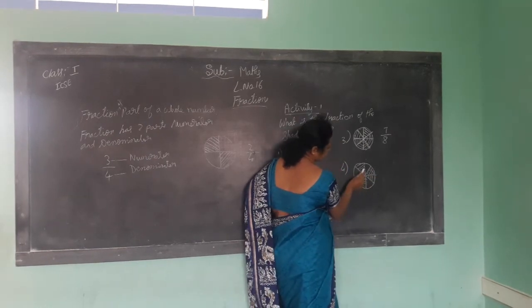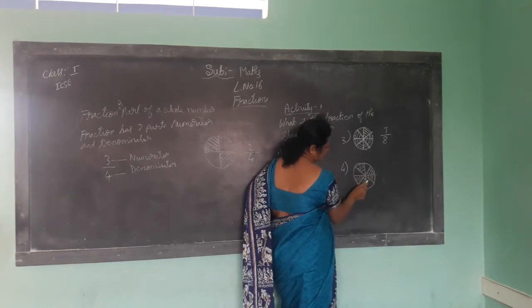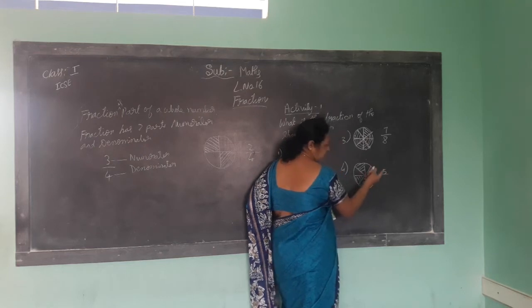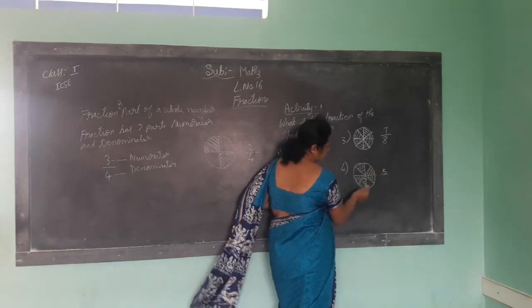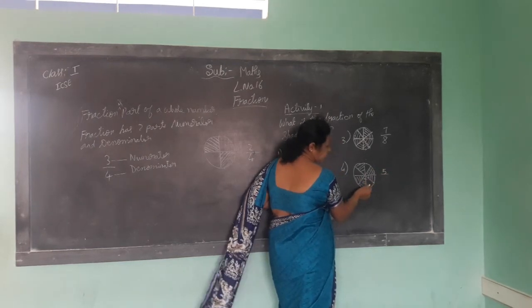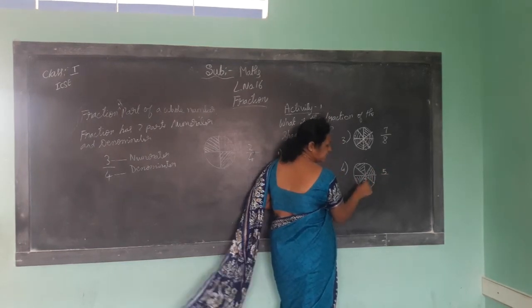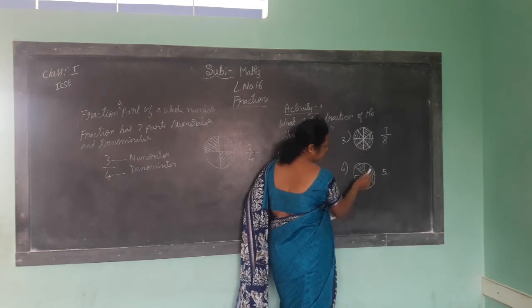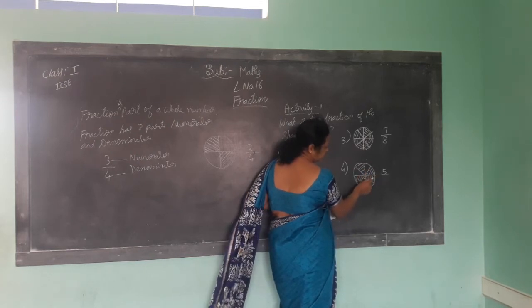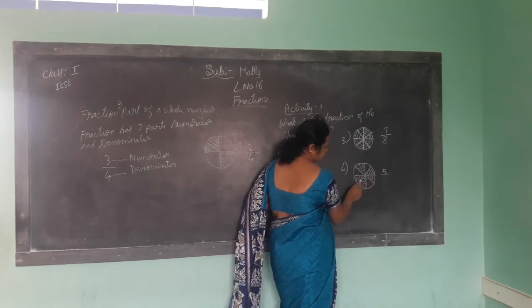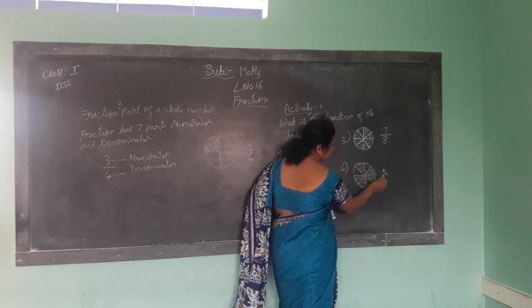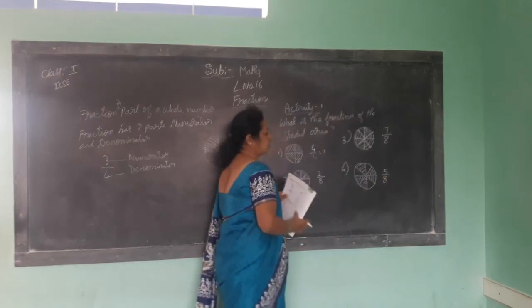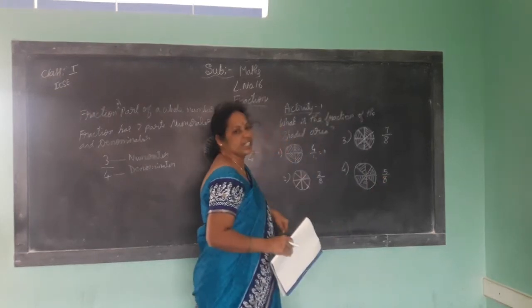How much is shaded? 1, 2, 3, 4, 5 is shaded — I write in the top. Now count shaded and uncolored: 1, 2, 3, 4, 5, 6, 7, 8. So 5 by 8. How will you read this? 5 by 8.